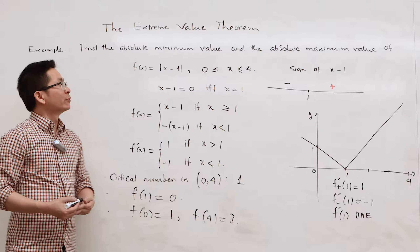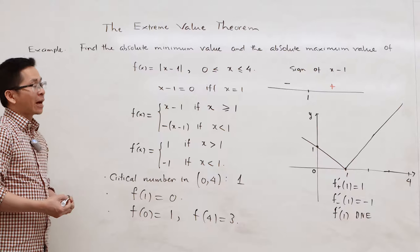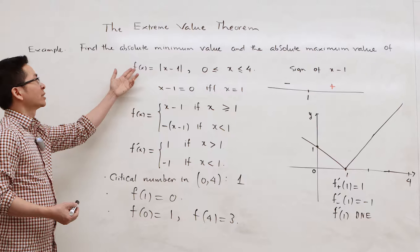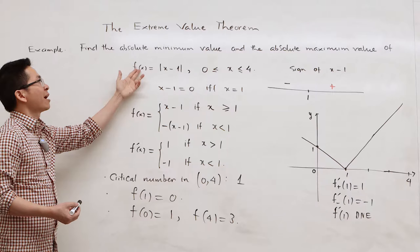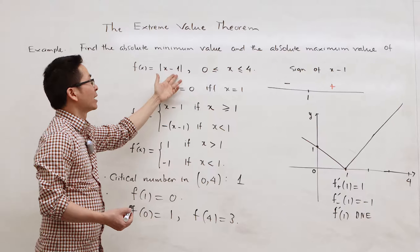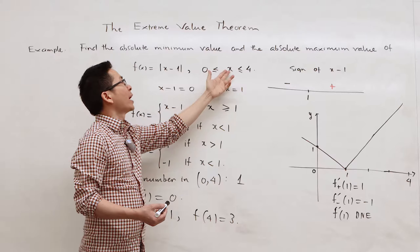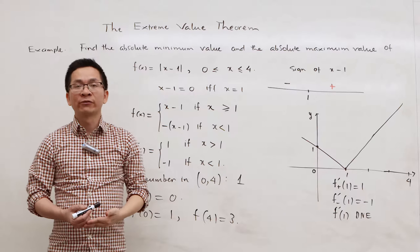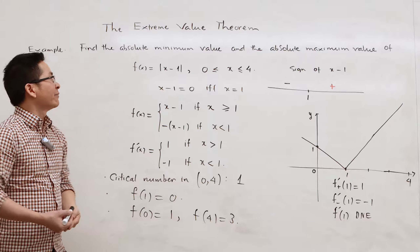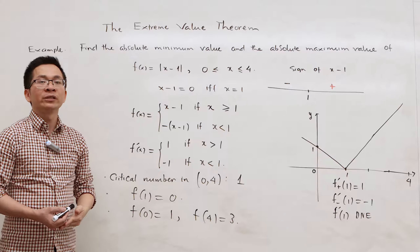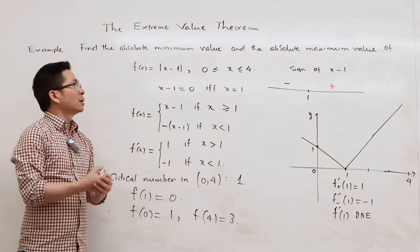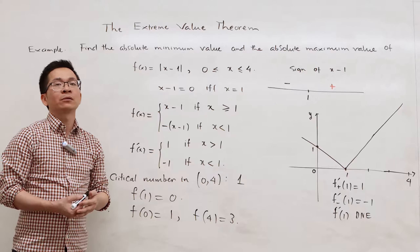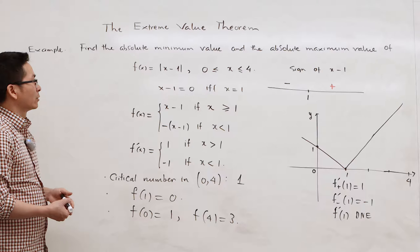In this example, we are going to find the absolute minimum value and the absolute maximum value of the function f, defined as f(x) = |x - 1|, where x is greater than or equal to 0 and less than or equal to 4. Note that f is a continuous function on the closed interval [0, 4], so f has an absolute minimum value and an absolute maximum value in this interval.